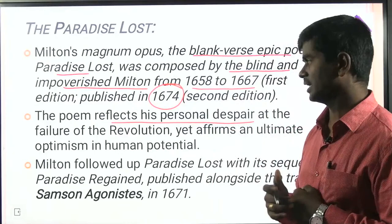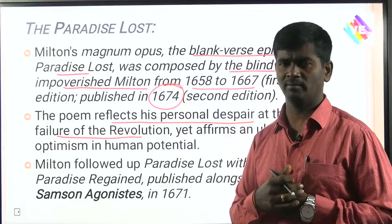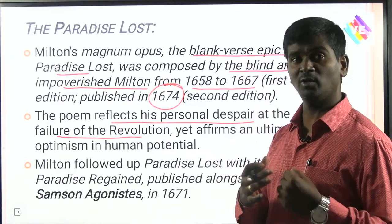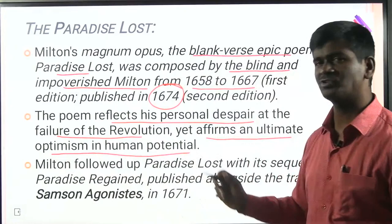The failure of the Puritan and Protestant revolution — they could not find a replacement for Oliver Cromwell and had to reinvite Charles II. Yet the poem affirms an ultimate optimism in human potential. Milton followed up Paradise Lost with its sequel Paradise Regained, and also wrote Samson Agonistes. All three works deal with the end of the godly Commonwealth — the paradise was gone.